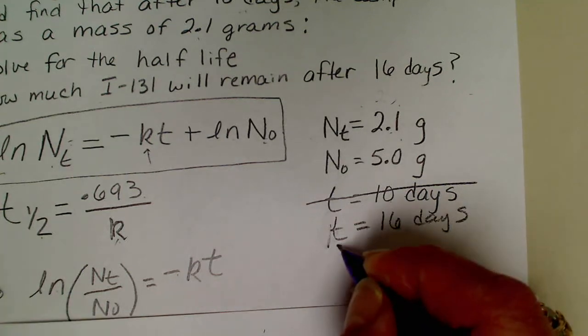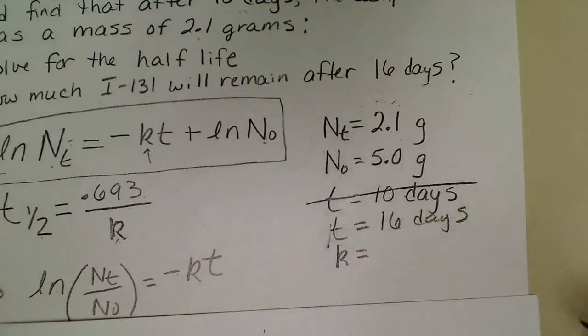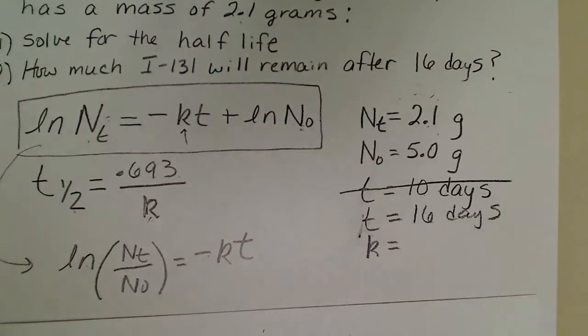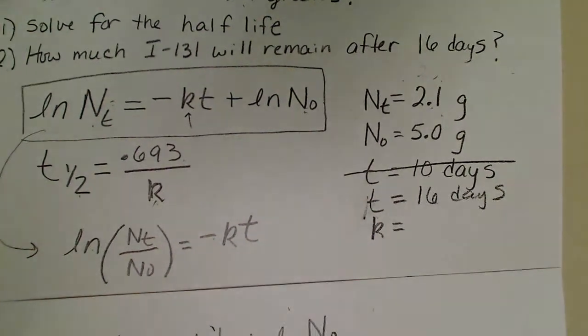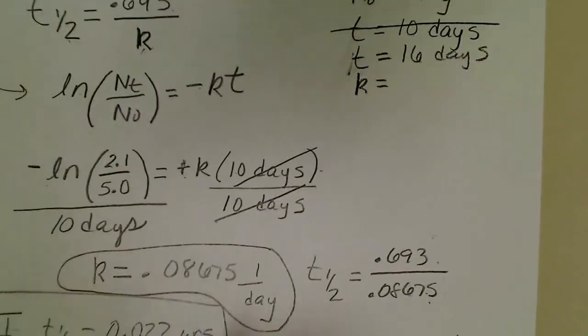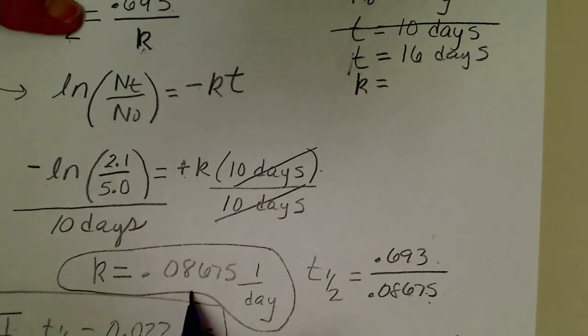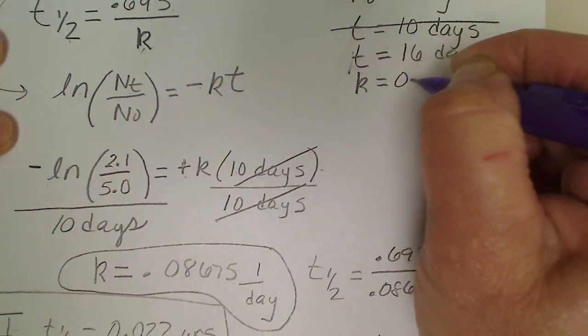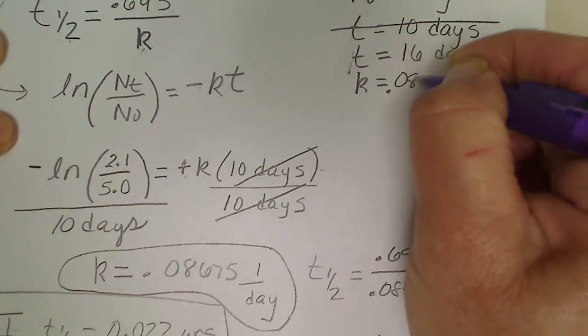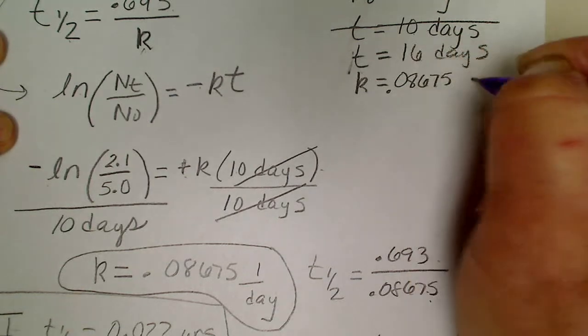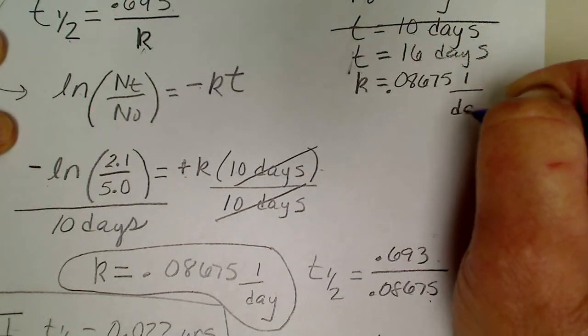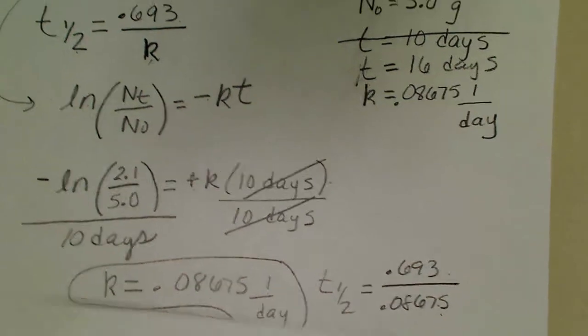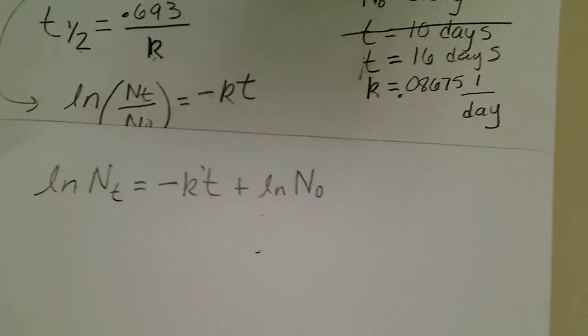We solved for k earlier and that is the decay constant of iodine, so no matter what the story problem is, that constant will be the same number because that's what it means to be a constant: 0.08675 reciprocal day.